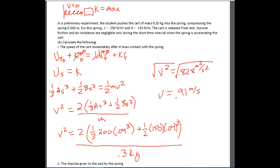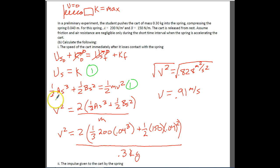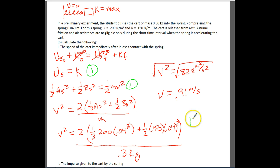For part B you get three points: one for showing conservation of energy, one for substituting the potential energy expression and the kinetic energy equation, and one for substituting values correctly and getting the final answer. Make sure you finish the calculation — don't assume they'll give you the point without a complete answer.